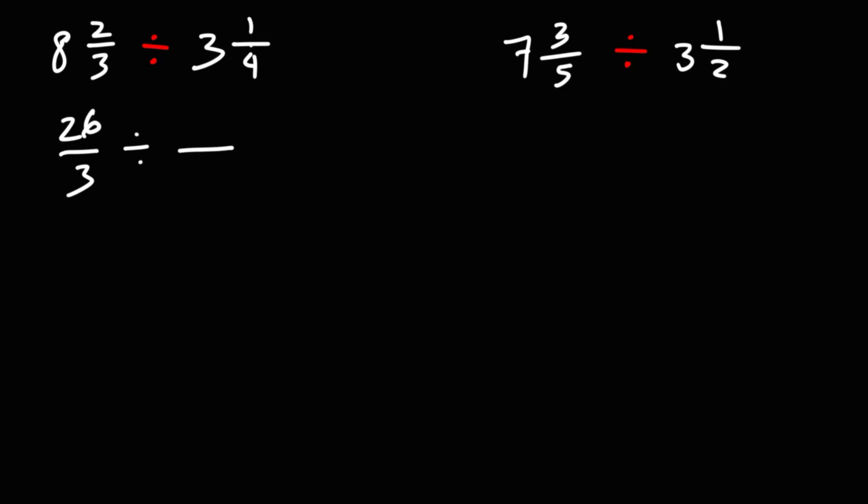For the second mixed number we have a denominator of 4 so we'll keep that the same. 4 times 3 is 12 plus 1. That's 13.